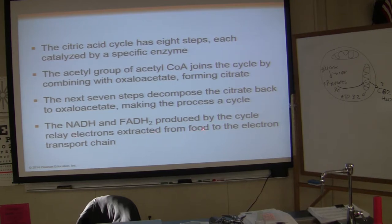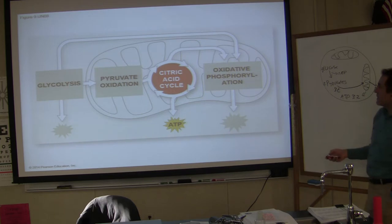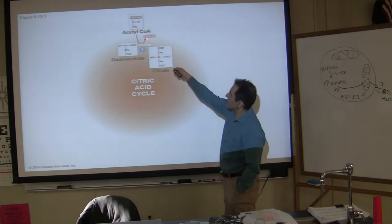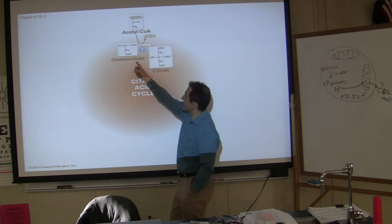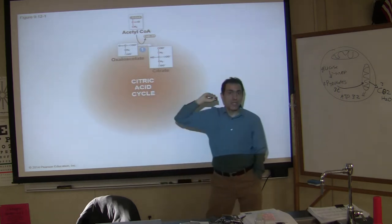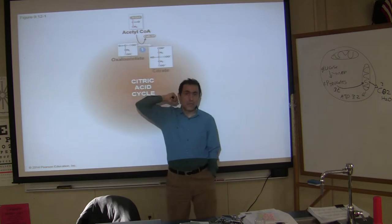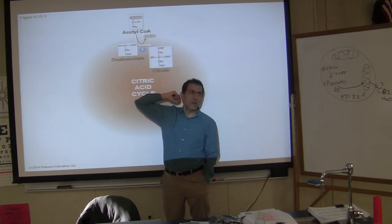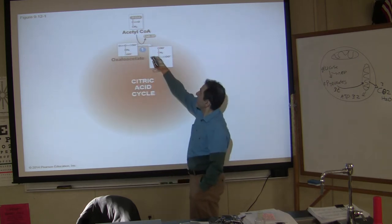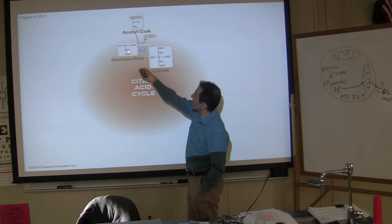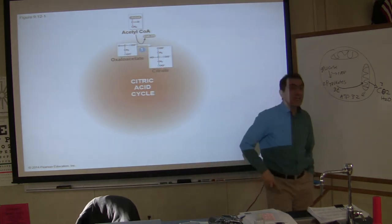The next seven steps decompose the citrate back to oxaloacetate, making the cycle. NADH and FADH produced by the cycle relay electrons extracted from food to the electron transport chain. Here is acetyl-CoA in the citric acid cycle diagram — the CoA goes off, and this is oxaloacetate. Oxaloacetate has four carbons. Acetyl-CoA has two carbons. Those two combined with four gives you citrate, which has six carbons.